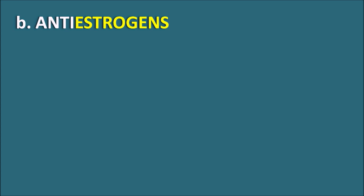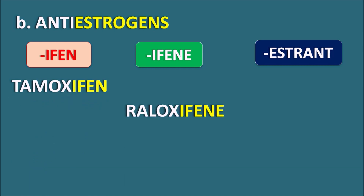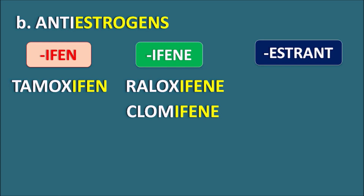The second category is the anti-estrogens, indicated by different suffixes like -ifen and -estrant. Drugs with the suffix -ifen include tamoxifen, raloxifene, and clomiphene. The suffix -estrant indicates estrogen antagonists; the drug is fulvestrant. All these are anti-estrogens, but nowadays we use the term SERM — selective estrogen receptor modulators — because these drugs have both antagonistic and agonistic activity depending on the organ.